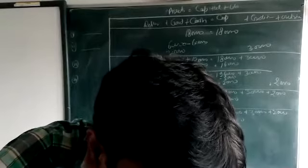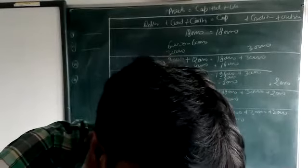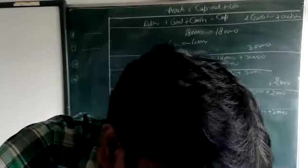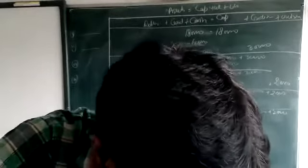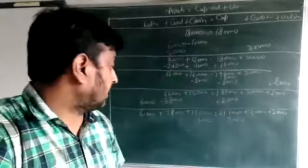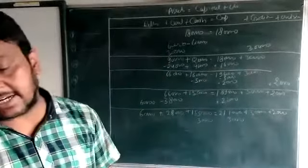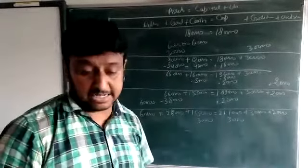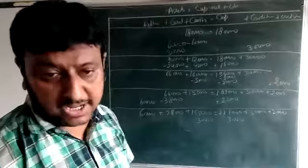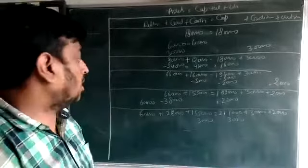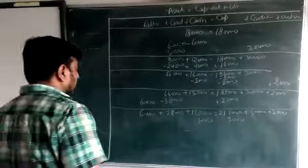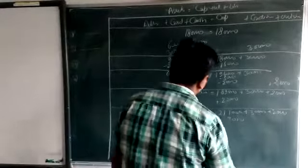Three thousand is reduced from both sides — cash and capital. On this way we finish question six. Now going for the next question.